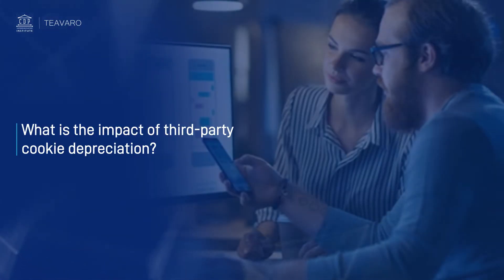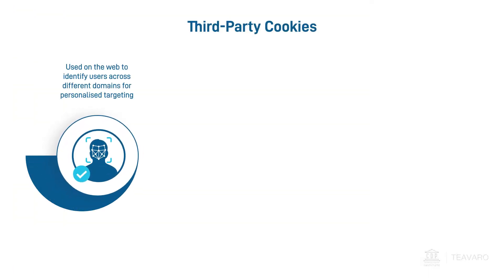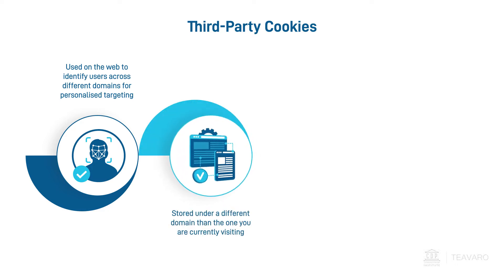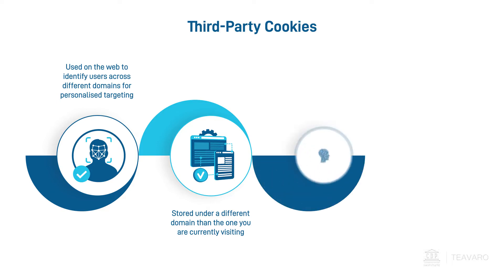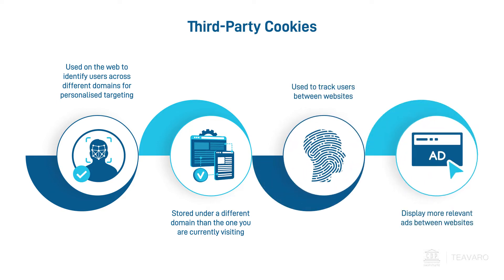This video answers the question: what is the impact of third-party cookie depreciation? Third-party cookies have been the main method on the web to identify users across different domains for personalized targeting. They are stored under a different domain than the one you're currently visiting, and are mostly used to track users between websites and display more relevant ads.